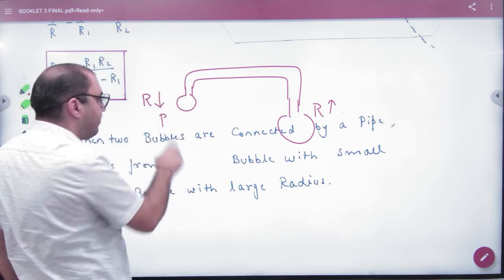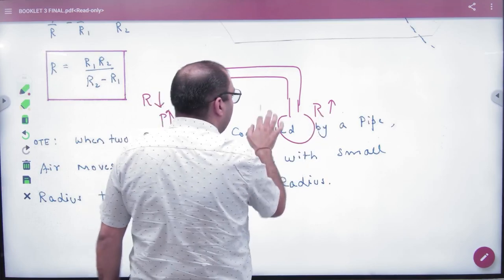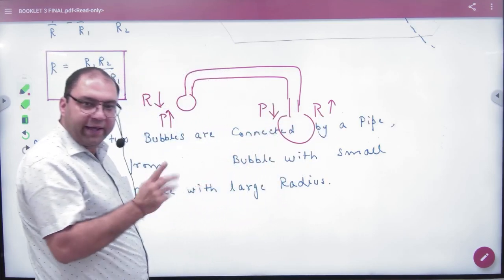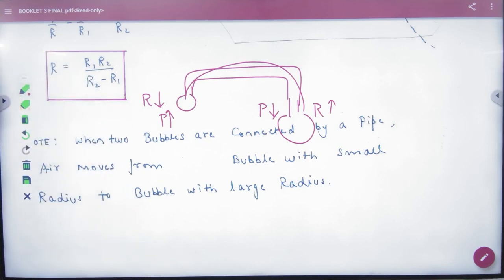Because of its own pressure, pressure is greater. There is a lot of pressure inside it. And the radius is bigger because the pressure here is less. Air moves from higher pressure to lower. So the rule is that it will move from small bubbles to big bubbles.